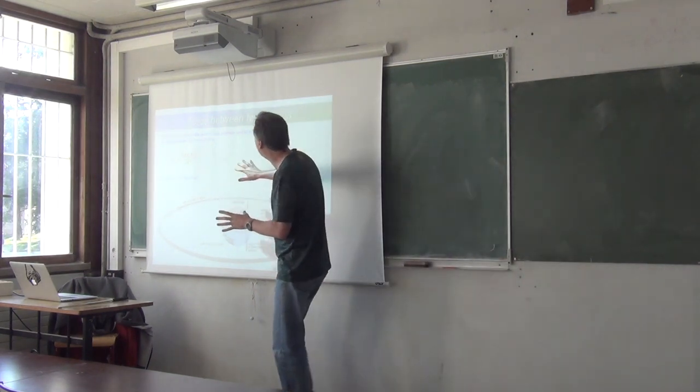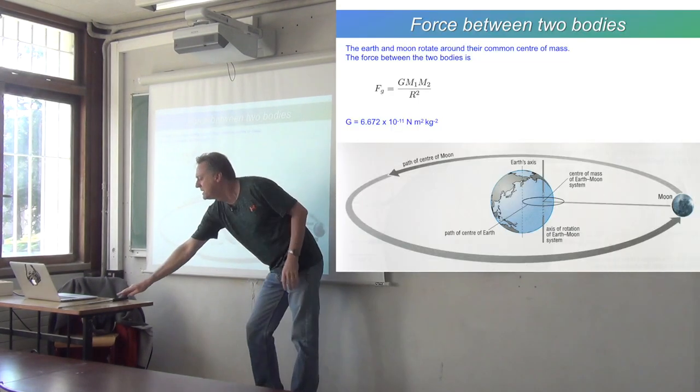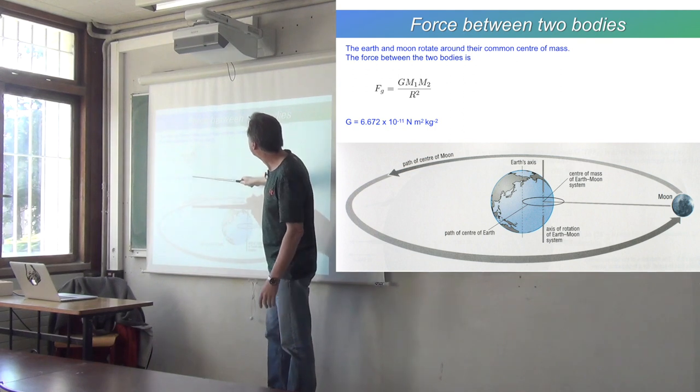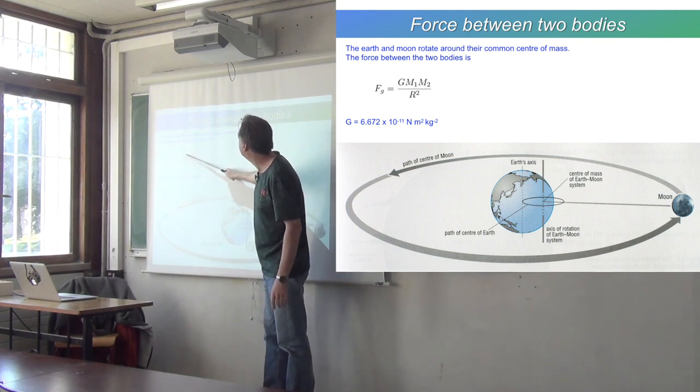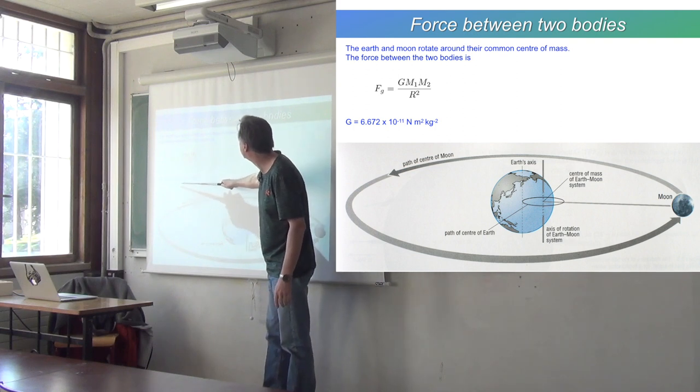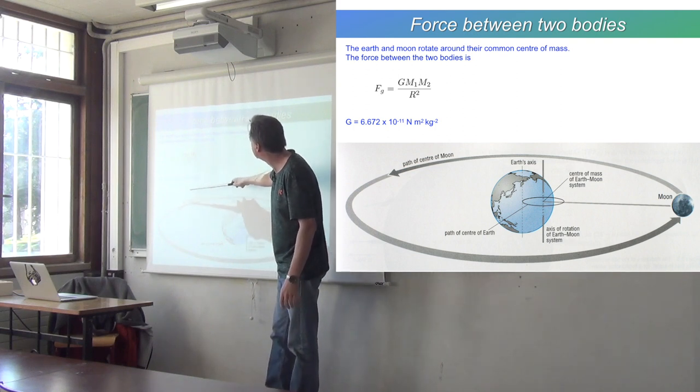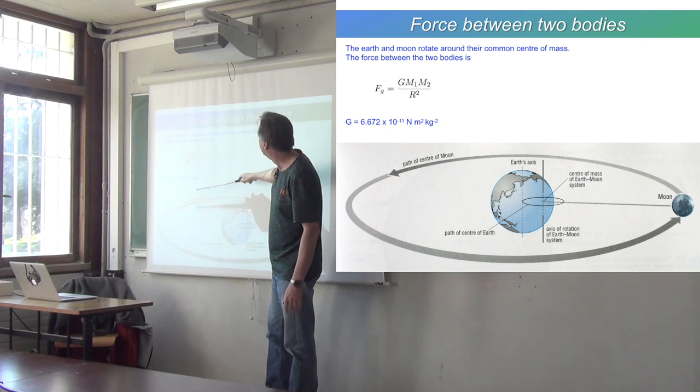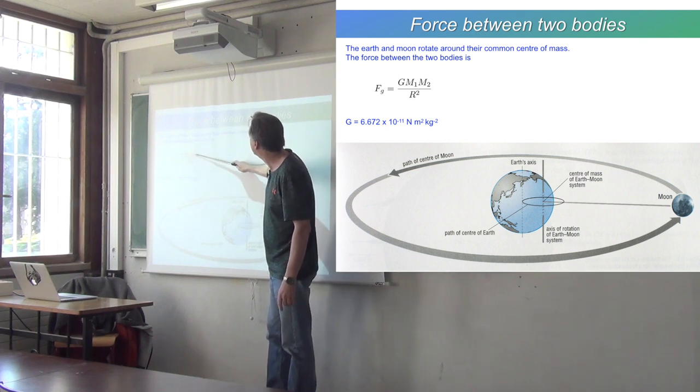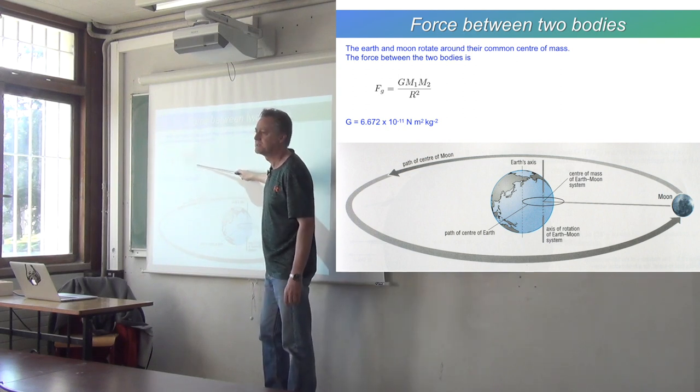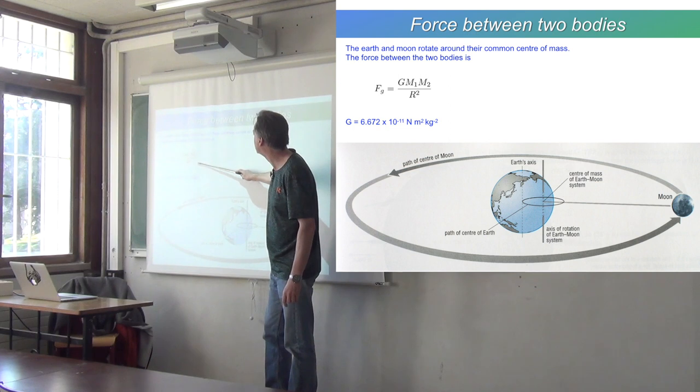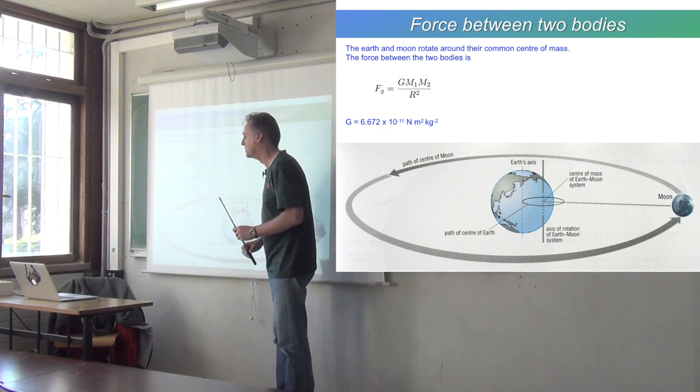So that gravitational force is, here's the formula. It's big G, the universal gravitational constant, which is 6.672 times 10 to the minus 11 newtons meters squared per kilogram squared, times the mass of the Earth times the mass of the Moon divided by the distance between their centers squared. That is the law of gravity. So that's the gravitational force between the Earth and the Moon.